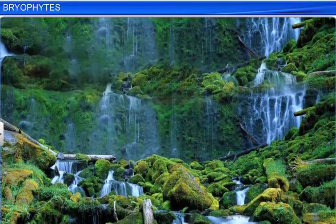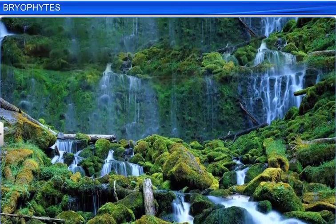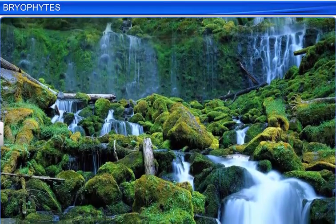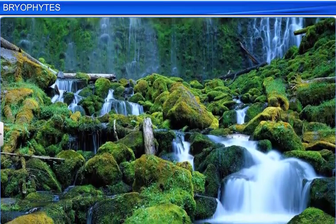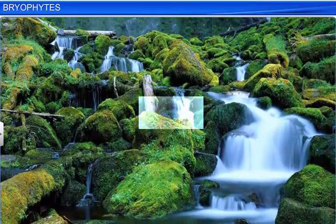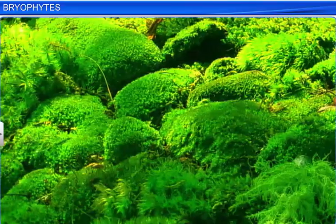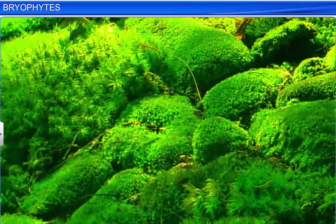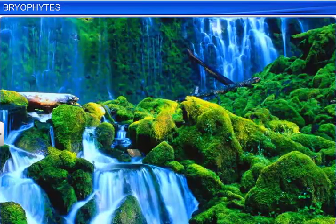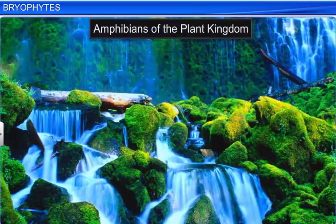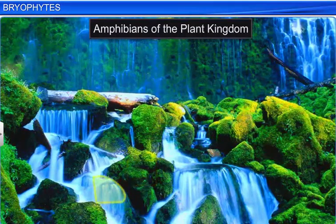It is common to see a green cover growing over rocks, bricks and walls after heavy showers. This green cover is nothing but moss, which is a type of Bryophyte. Bryophytes are plants that usually grow in damp, humid and shaded localities. They are also called amphibians of the plant kingdom, because though Bryophytes grow in soil, they need a moist habitat for sexual reproduction.